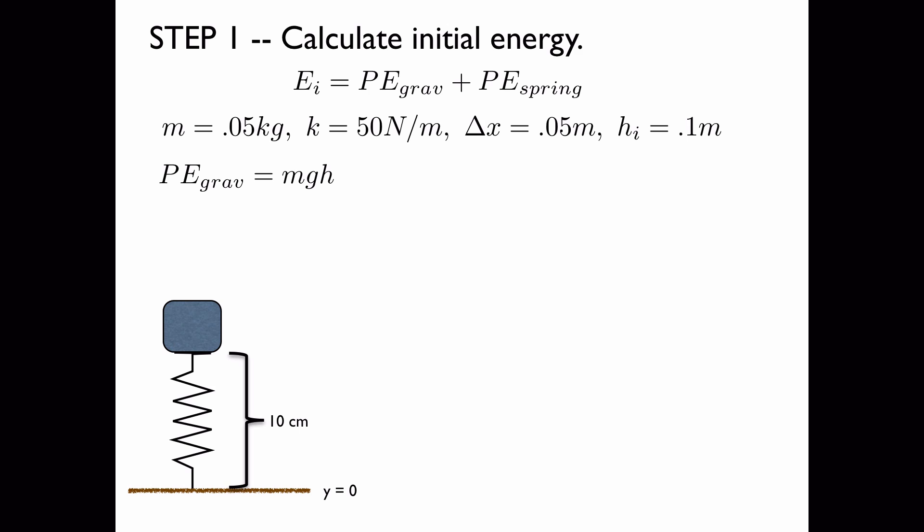We'll first calculate the gravitational potential energy, which is given by the formula MGH. Plugging in the numbers, we get our result.